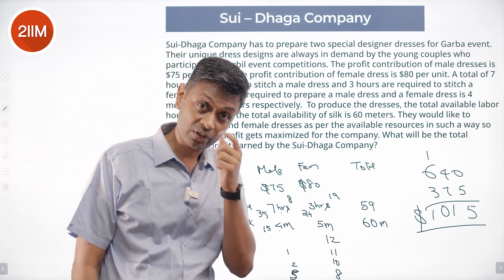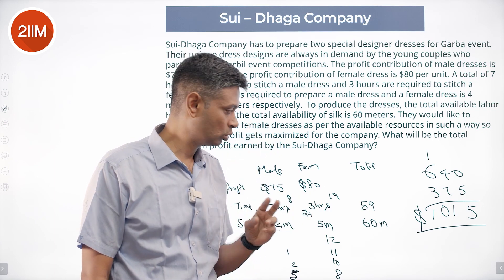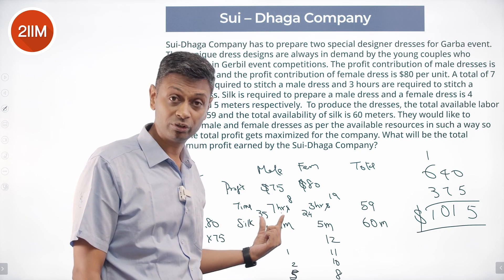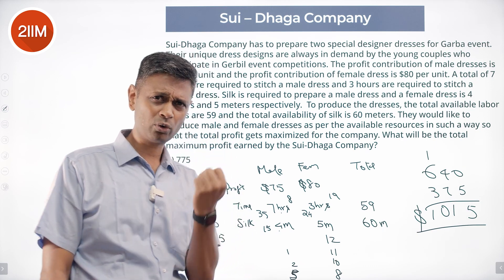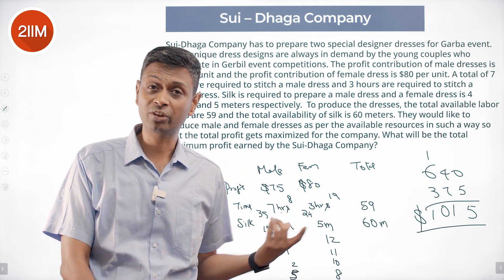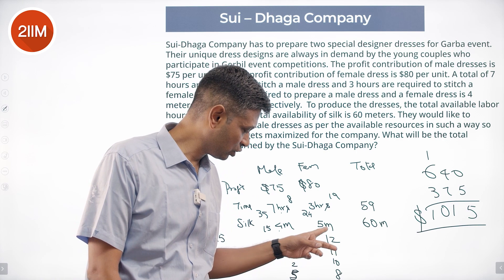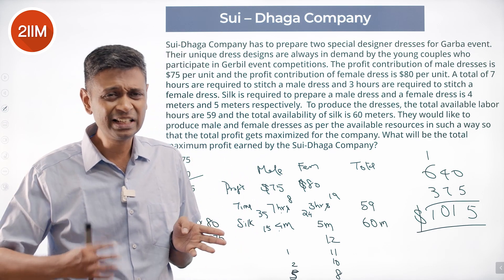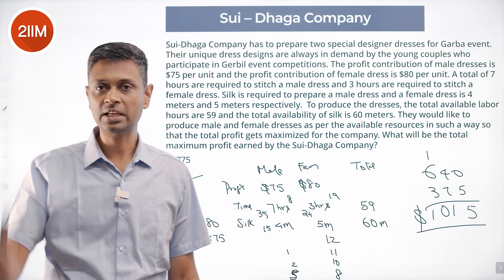The key is identifying the limiting constraint. From a timing perspective, female dresses are the best decision at 3 hours each. But silk becomes the binding constraint — I can make 12 female or 15 male based on silk alone, but no more than 8 male based on hours. Starting from 12 female dresses and then replacing some with male dresses to utilize spare hours, the combination of 8 female and 5 male works perfectly.